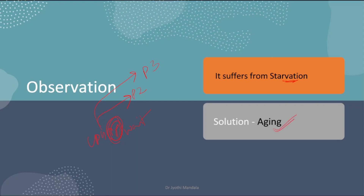That problem can be solved by using aging. Aging means after a certain period of time, if some processes are waiting in the queue and not getting a chance because of their low priority, we change their priority to the next higher level. For example, after 15 minutes, a process with rank 4 becomes rank 3, and rank 5 becomes rank 4. After another 15 minutes, ranks are increased again. This way, waiting processes eventually get a chance to be executed.